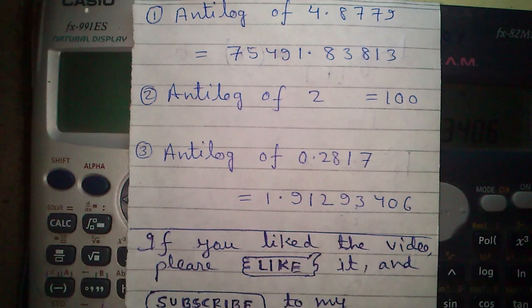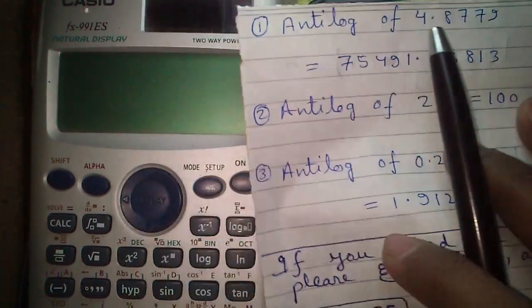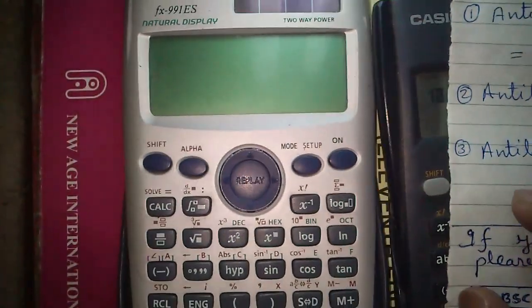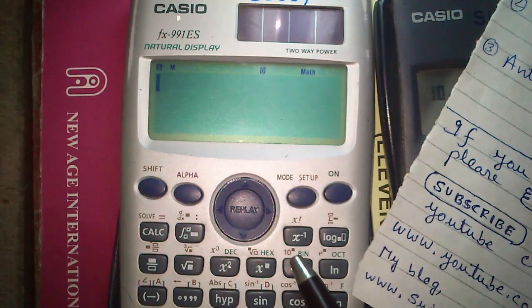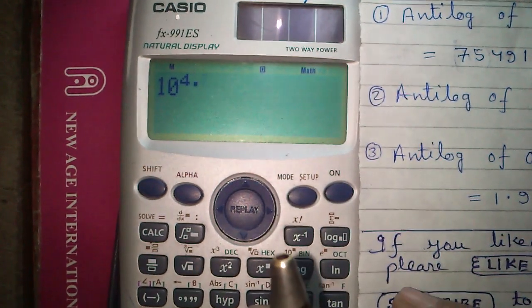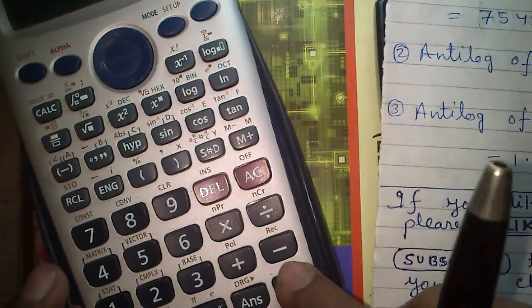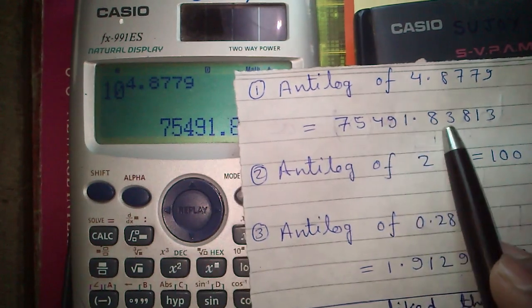To find out antilog of 4.8779 using FX-991ES calculator, press shift and the log button to get antilog operator and enter your data 4.8779 and press the equals button. That is 75491.83813.